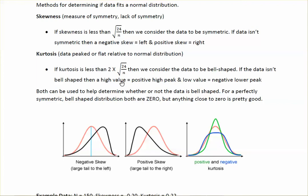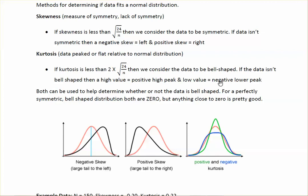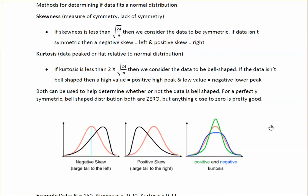If the data isn't bell-shaped, a high kurtosis value equals a positive, higher peak, and a low value equals a negative, lower, flatter peak. In the visual, the green curve goes up higher — that's a positive kurtosis. The negative is the lower, flatter curve. For a perfectly symmetric bell-shaped distribution, both skewness and kurtosis should be 0, but anything close to 0 is pretty good.